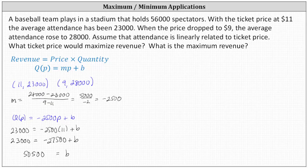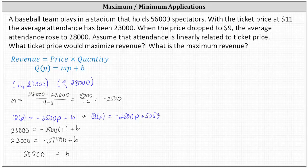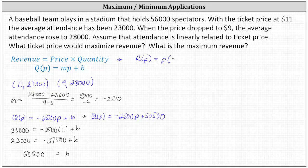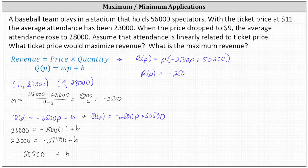So now we know our quantity function Q of P is equal to negative 2,500P plus 50,500. Now that we have Q of P, we can determine our revenue function. The revenue function R of P is equal to the price P times the quantity Q of P, which is negative 2,500P plus 50,500. Distributing the P, we have R of P equals negative 2,500P squared plus 50,500P.